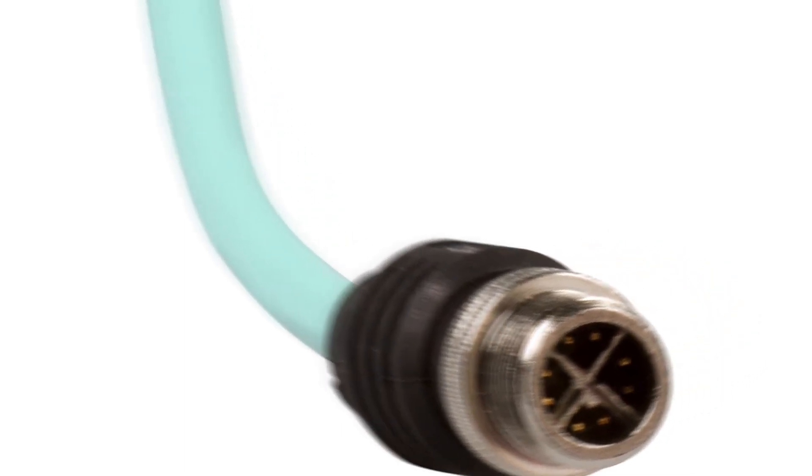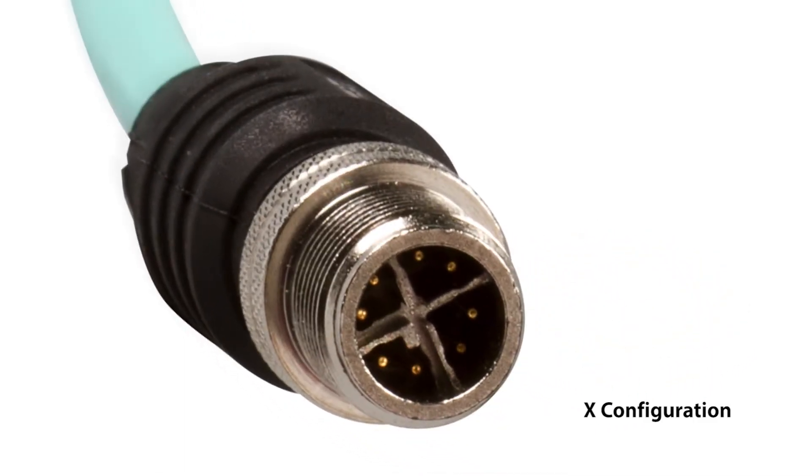For these higher category cables, a modified M12 is required, which results in an X configuration in the connector. Each pair is located within a segment of the X configuration, providing additional separation of the pairs.